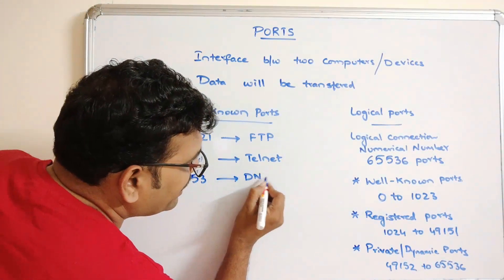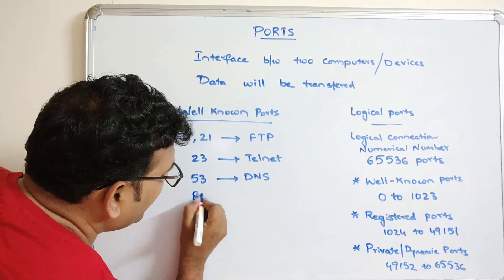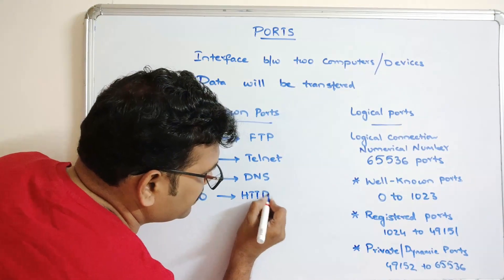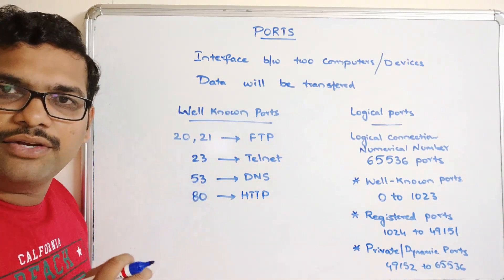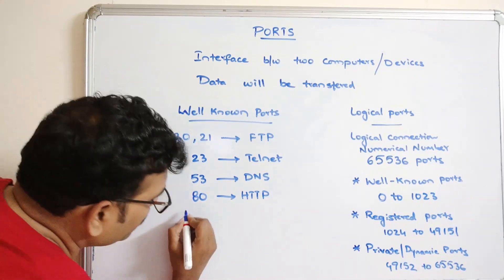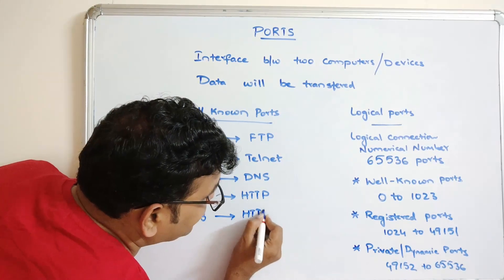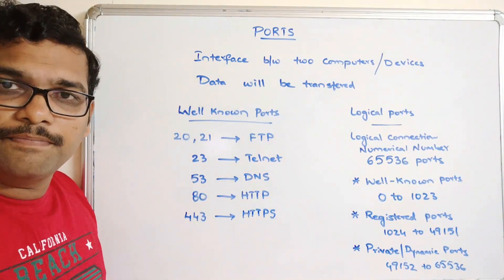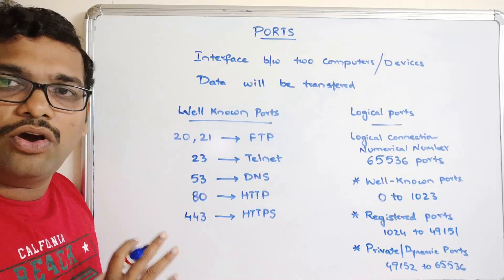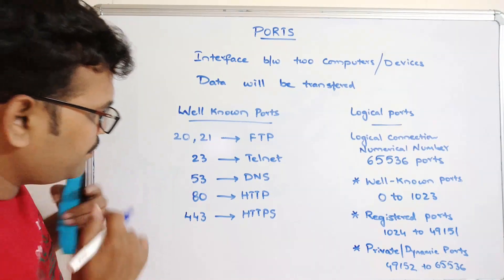Port 53 is for DNS — Domain Name Service. Port 80 is for HTTP web services — for all web services the port number will be 80, so HTTP requests use port 80. Port 443 is for HTTPS — secure HTTP. These are all well-known ports registered for specific purposes.